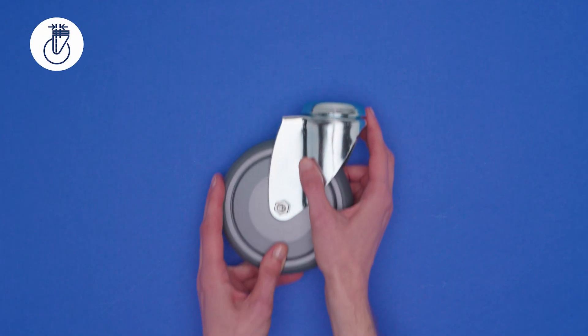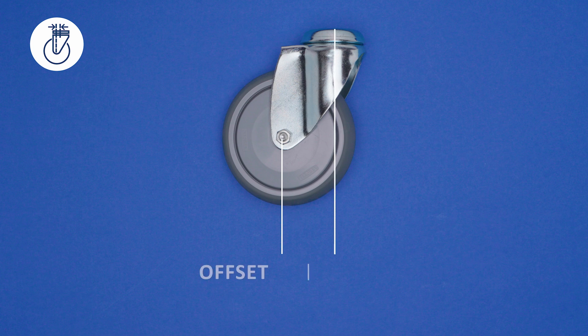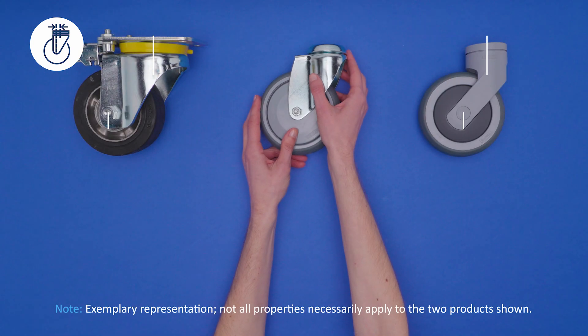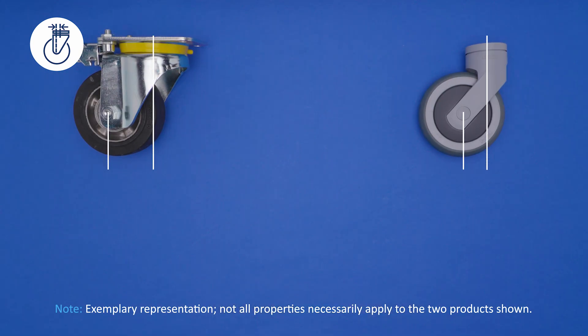For swivel casters, the offset describes the horizontal distance between the center of the wheel axle and the center of the caster's fitting, like a bolt hole. The offset is an important factor when it comes to the construction of casters in general. After all, it influences the features of the caster and the swiveling properties.